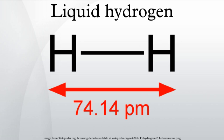Liquid hydrogen is typically used as a concentrated form of hydrogen storage. As with any gas, storing it as liquid takes less space than storing it as a gas at normal temperature and pressure. However, the liquid density is very low compared to other common fuels. Once liquefied, it can be maintained as a liquid in pressurized and thermally insulated containers. Liquid hydrogen consists of 99.79% parahydrogen and 0.21% orthohydrogen.